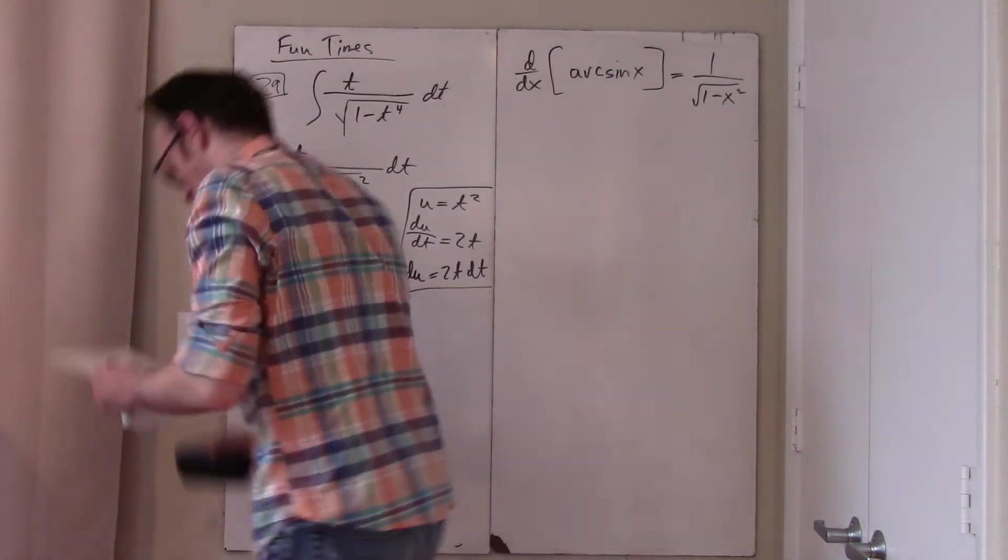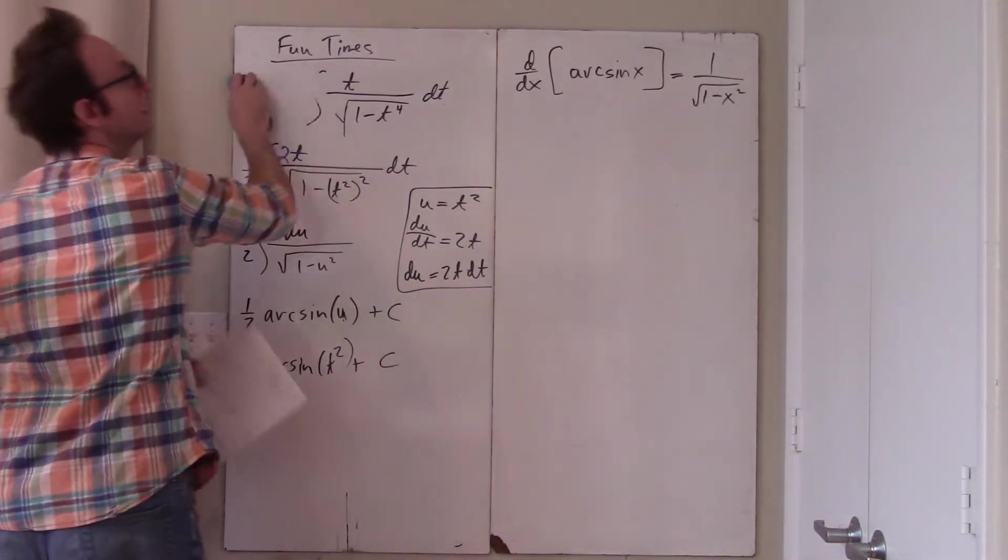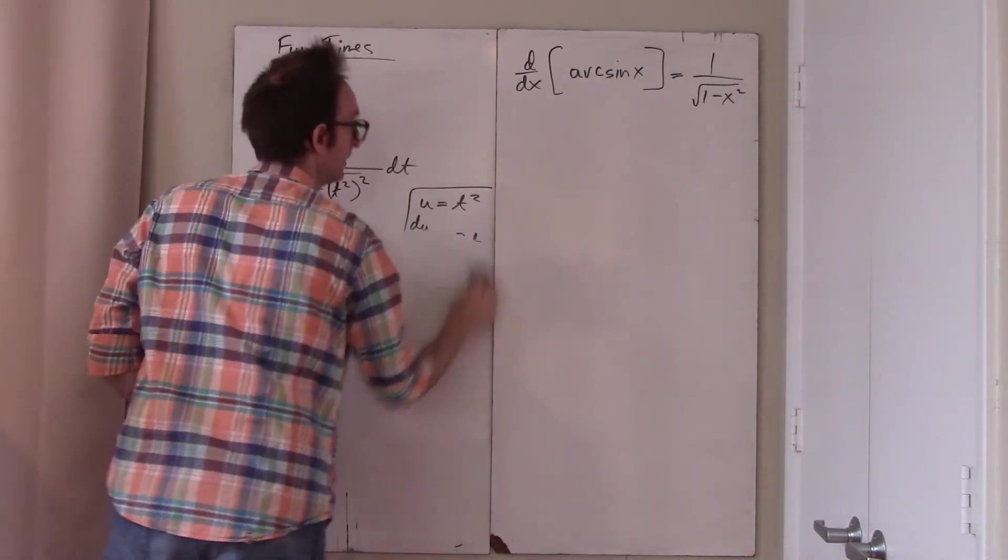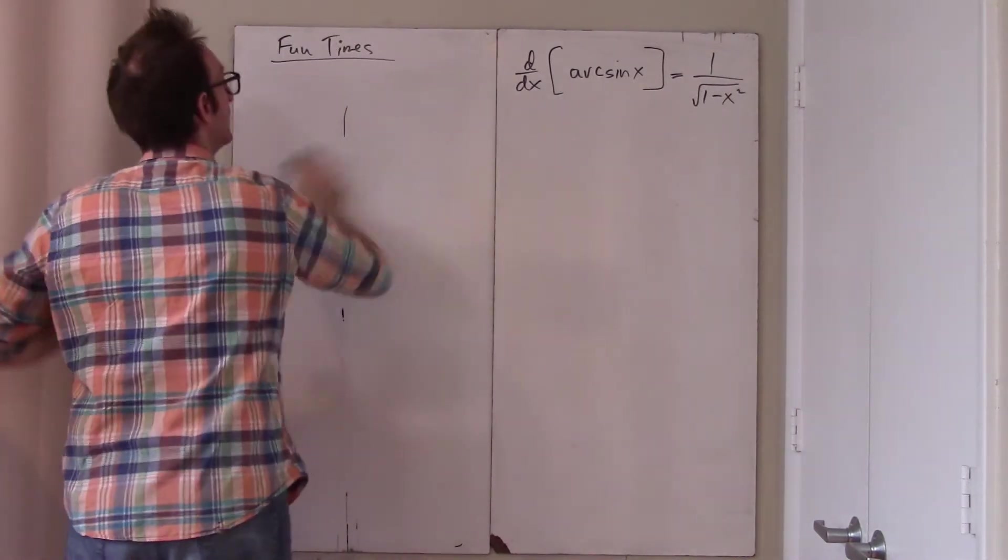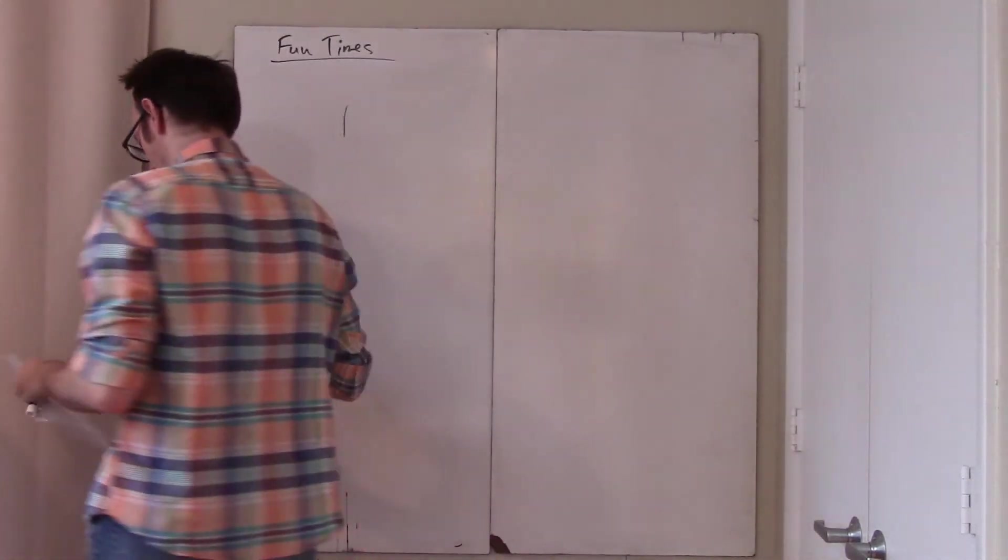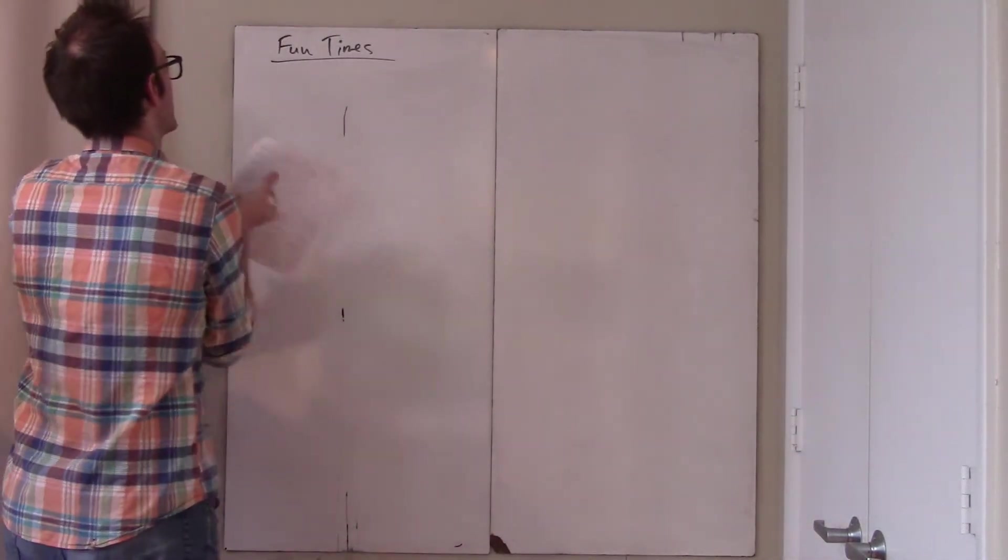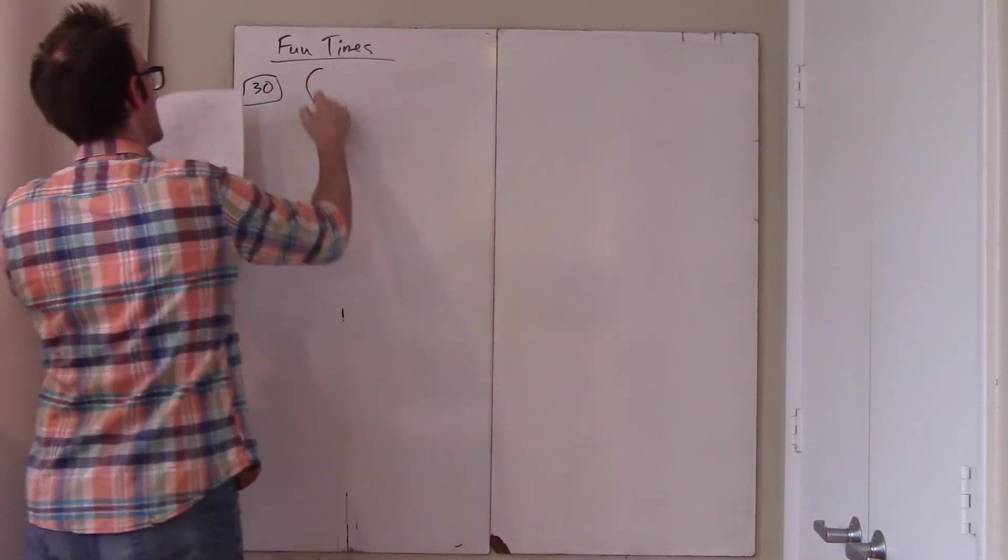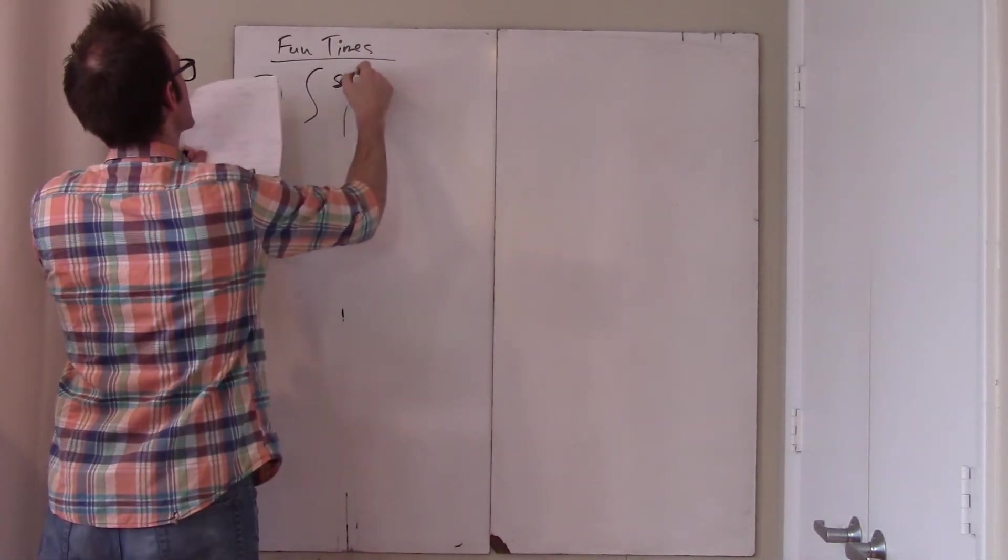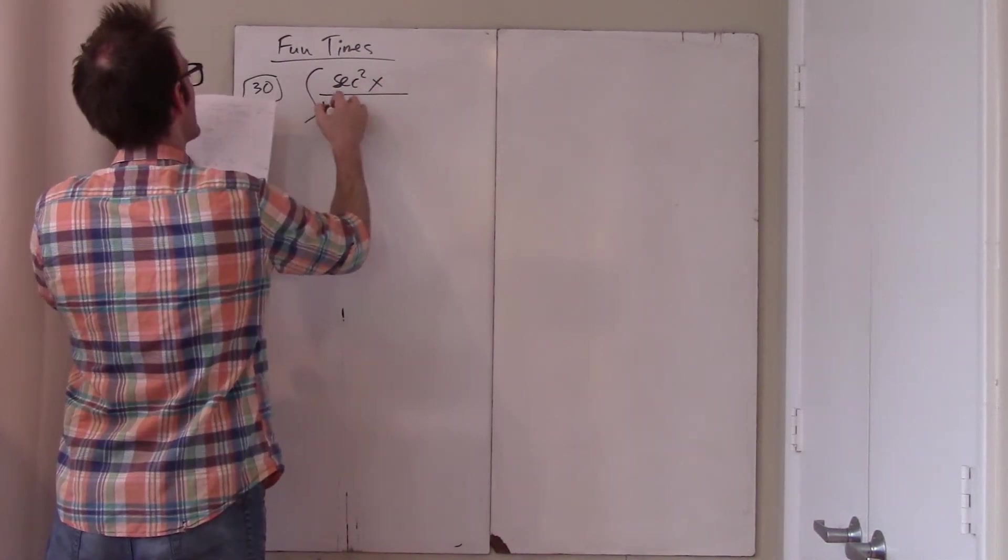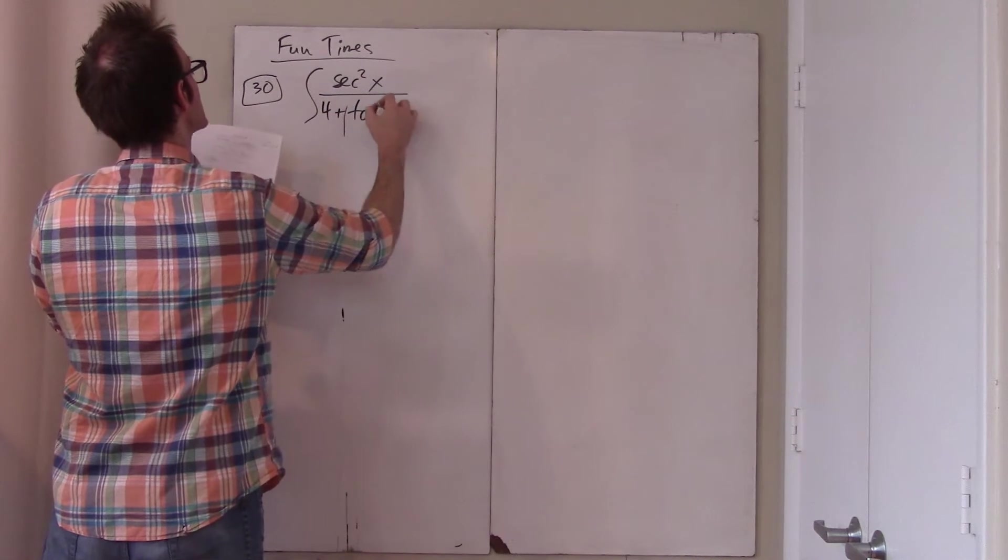Let's go. Okay, this is a little bit repetitive, but whatever. Number 30. I don't think there's any easier way to do this. Secant squared x over 4 plus tan squared x.